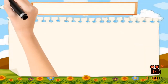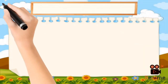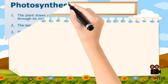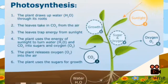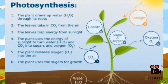Let us look at the events that take place during photosynthesis. First, the plant draws up water through the roots. Second, the leaves take in carbon dioxide from the air. Third, the leaves trap solar energy from sunlight by the help of its chlorophyll. Fourth, the plant uses the energy of sunlight to turn water and carbon dioxide into sugars and oxygen.